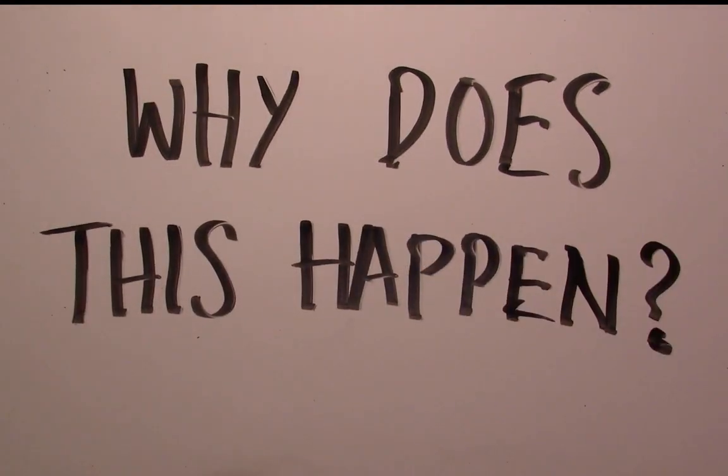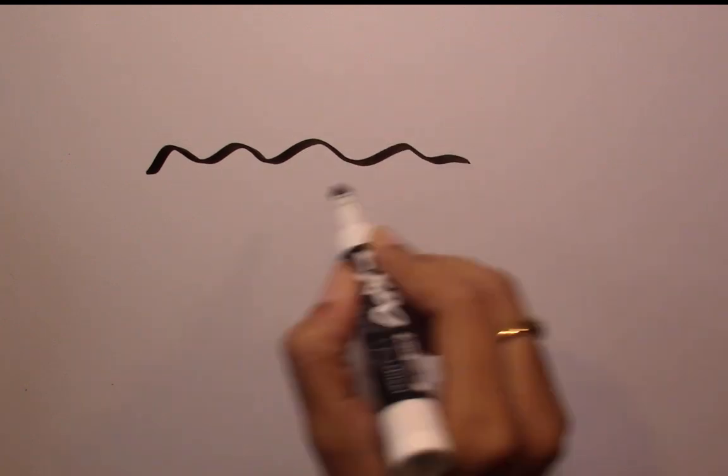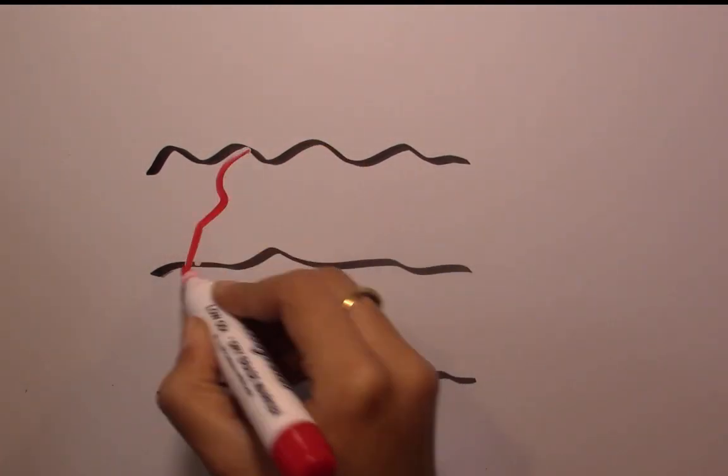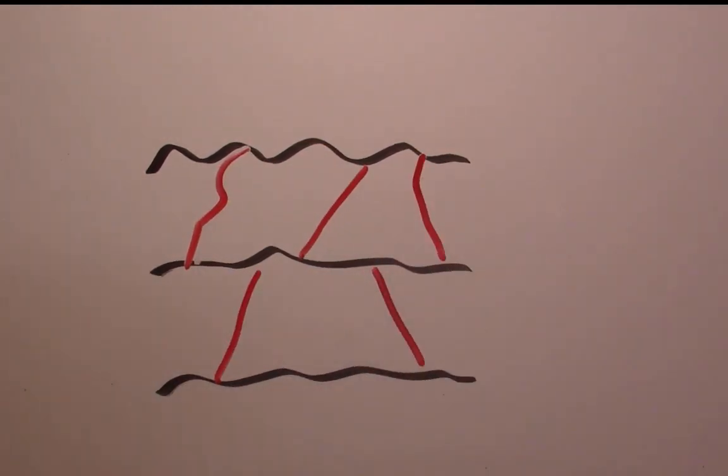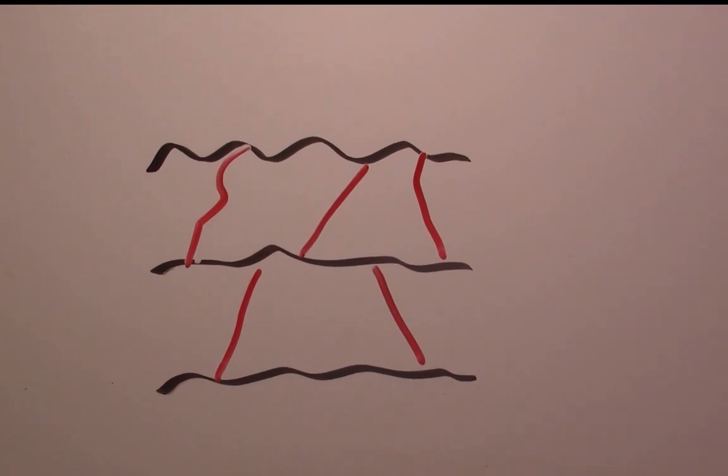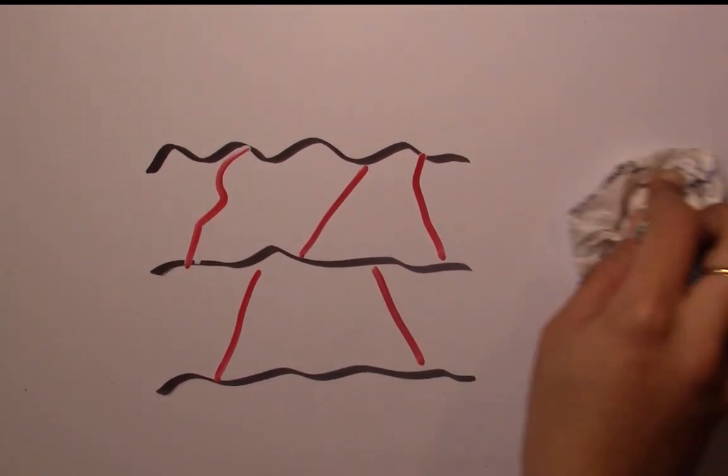So why does this happen? When thermosets are heated, the polymer chains begin attaching to each other in a process called crosslinking. The crosslinks give the thermoset a permanent 3D structure, and makes them more resistant to melting.